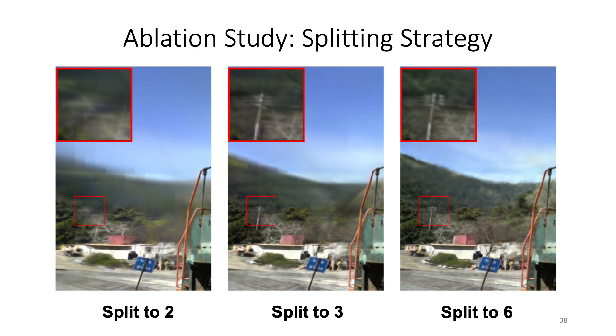Here we show an ablation of the number of convexes each convex splits to, and as you can see, the more convexes we split during the densification, the better the results become, specifically in background areas.